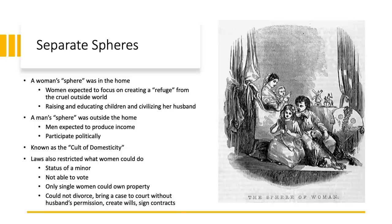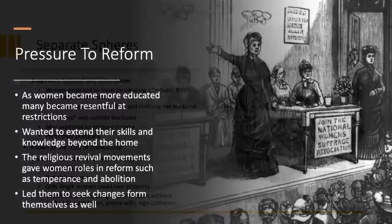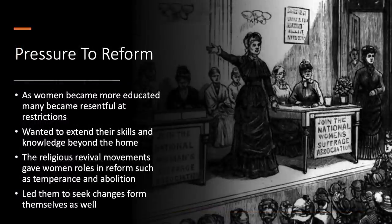In addition to social norms, laws restricted women and gave them the same status as a minor. These laws denied women the right to vote; in most states women could not own property or make wills; if women worked outside the home they could not keep their income; women could not bring a case in court without their husband's permission; and they could not petition for a divorce — in the event of one, children and property belonged to the husband. As a result of the education movement, women were becoming more educated and admitted to colleges, and many grew resentful of the restrictions, wanting to extend their skills beyond the home. The religious revival movement also gave women roles in reform movements, leading them to seek changes for themselves.